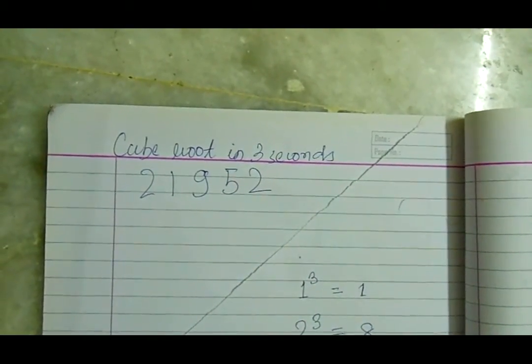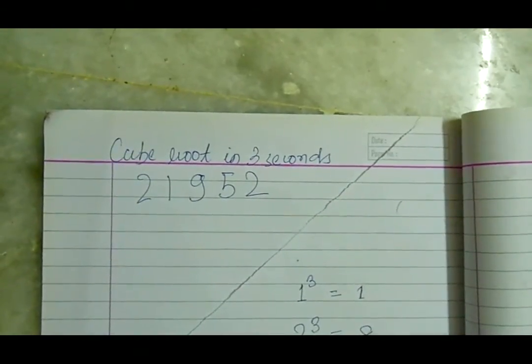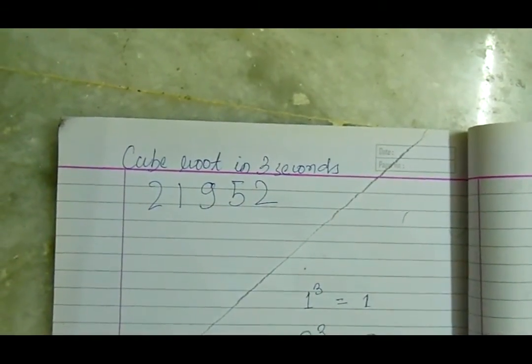If you got 28, it's okay. If not, then don't worry. After I explain this trick to you, you will be able to calculate the cube root of this big number in 3 seconds.